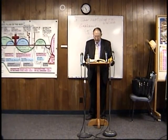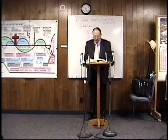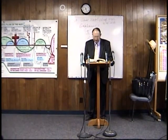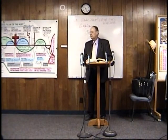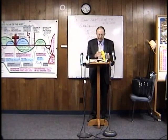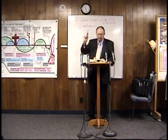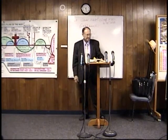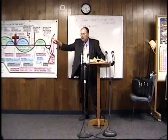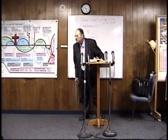The people said, 'You shall not go out, for if we indeed flee, no one will care — even if half of us die. But you are worth 10,000 of us; therefore it is better that you be ready to help us from the city.' They told David: you're worth 10,000 men — 10,000 men will die for you. The king said, 'Whatever seems best to you, I will do.' So the king stood beside the gate, and all the people went out by hundreds and thousands. The king charged Joab, Abishai, and Ittai: 'Deal gently for my sake with the young man Absalom.'